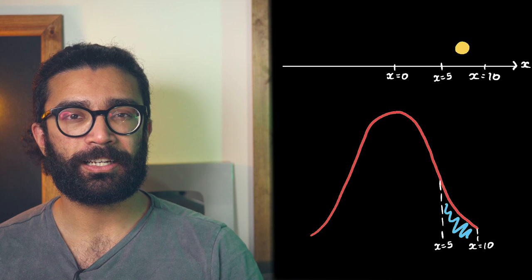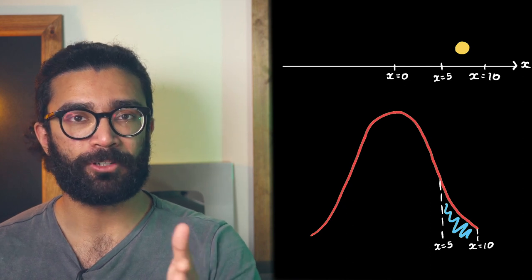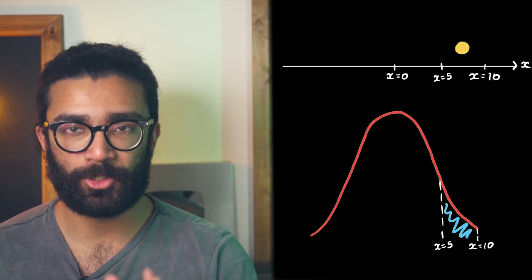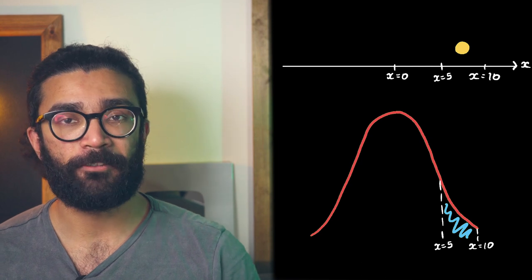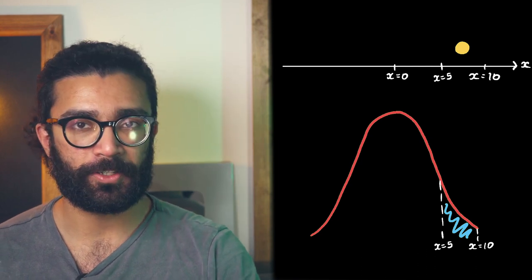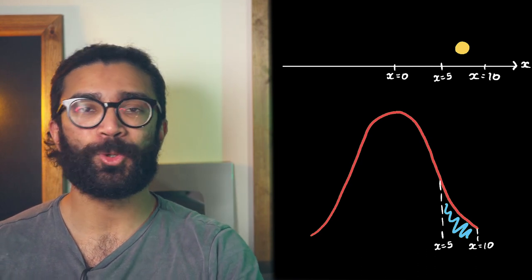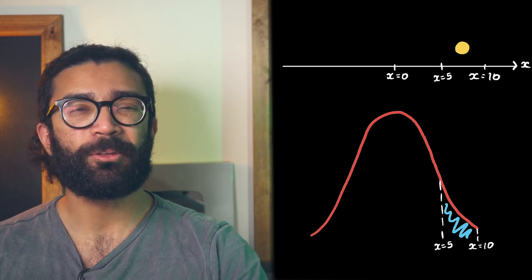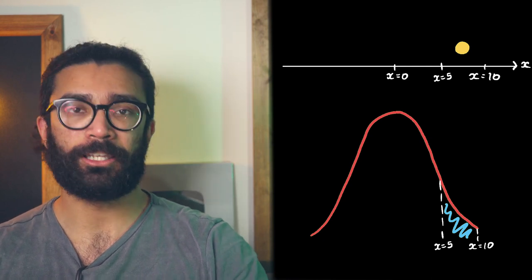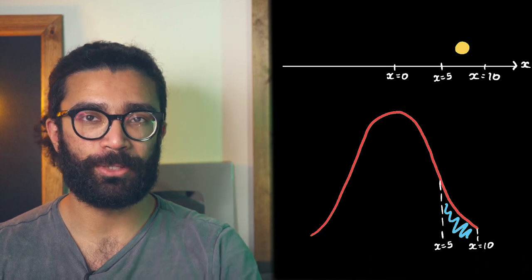And of course we've just looked at the likelihood of the particle being found at different positions along one single dimension. In this case left to right or the x direction. But we could extend this to two or three dimensions also, with the mathematics and diagrams becoming a little more complicated, but the logic being the same.